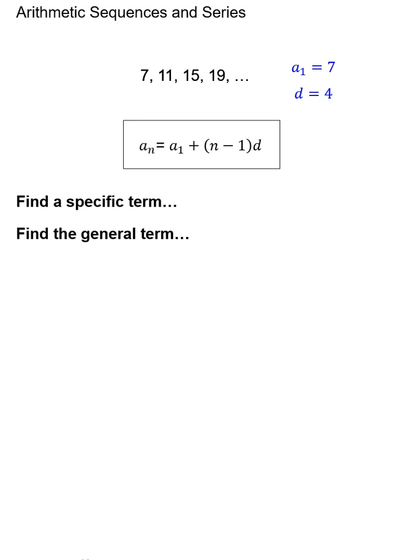Something called the general term, also known as the nth term, is a formula that will allow us to find any term. So in this case we wouldn't replace n with anything if we were being asked for the general term. n would just stay as n. Plugging in once again a₁ and d which we know by looking at the sequence and doing some basic algebra, you have a formula for what's called the general term or the nth term.